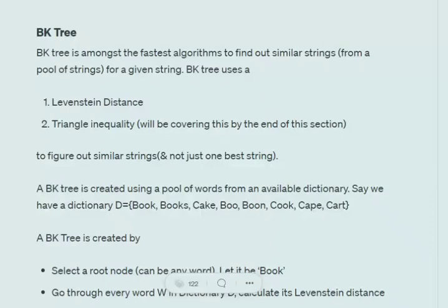Today we will be discussing a very important, one of the fastest fuzzy matching algorithms, not known by many — that is the BK Tree. The BK Tree uses two major concepts: one is the Levenshtein distance and another is the triangle inequality. Using these, it helps us execute fuzzy matching logic over a set of vocabulary.